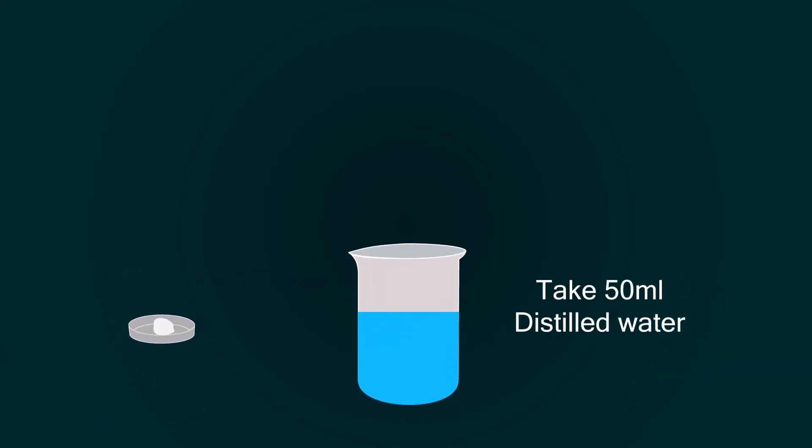Now take some distilled water in a beaker up to 50 ml and put the sodium diphenylamine sulfonate chemical into it. Mix it with the help of a spatula to make a homogeneous mixture.